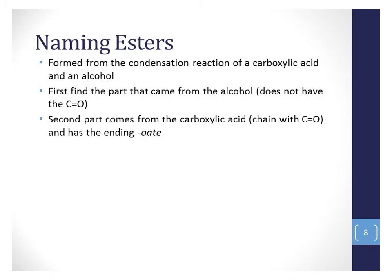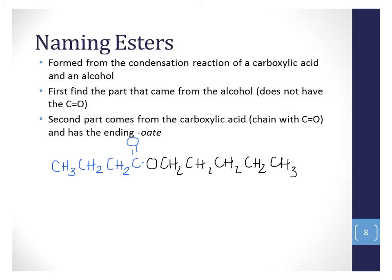It's important to know how esters form because it's reflected in the name. The first part of the name comes from the alcohol — the side of the molecule that does not have the C double bond O incorporated in it. The second part of the name comes from the carboxylic acid — the side of the chain with the C double bond O in it. Look at the blue part of the chain: we can see our C double bond O bonded to our other oxygen there in the center.